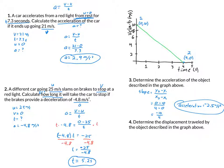Example problem 4: find the displacement from the same graph. Since displacement is the area under a velocity-time graph, and the shape is a triangle, we use one-half base times height: one-half times 4 times 10 equals 20 meters. Go back and digest this video, pause and rework the problems, cover the work and try it yourself, and we'll do more practice in class.